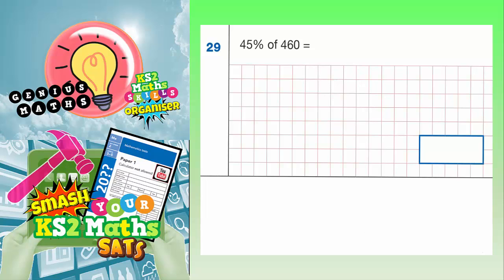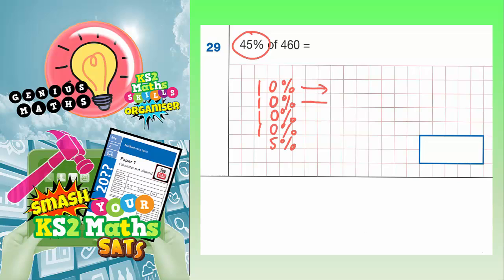Question 29: 45% of 460. The easiest thing to do here is break down the 45% into easy percentages that we can work with: 10%, another 10%, another 10%, another 10%, and 5%. These are all percentages that we should be able to find reasonably easy to work out in our heads.